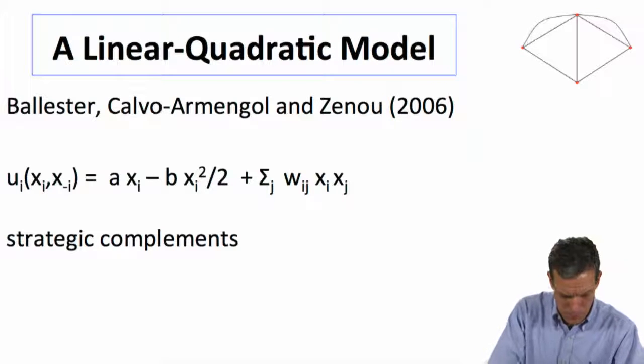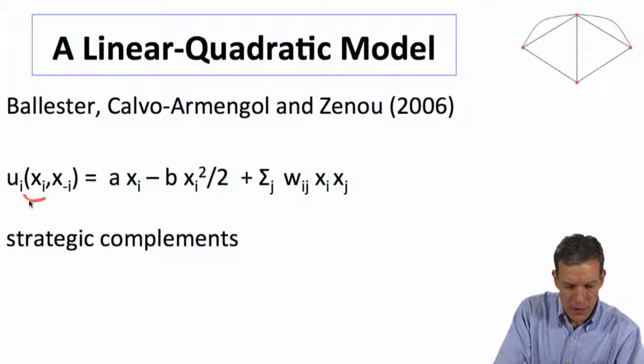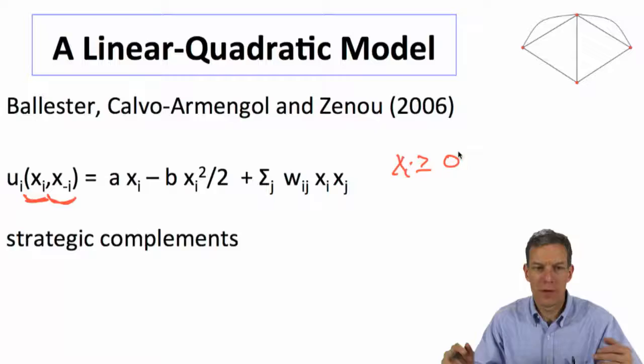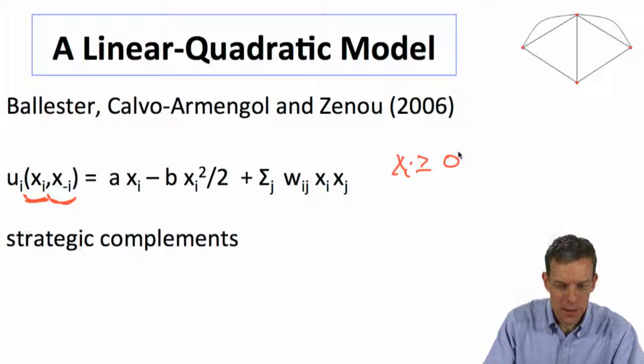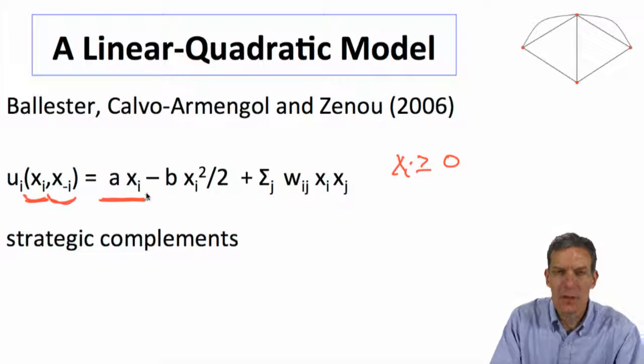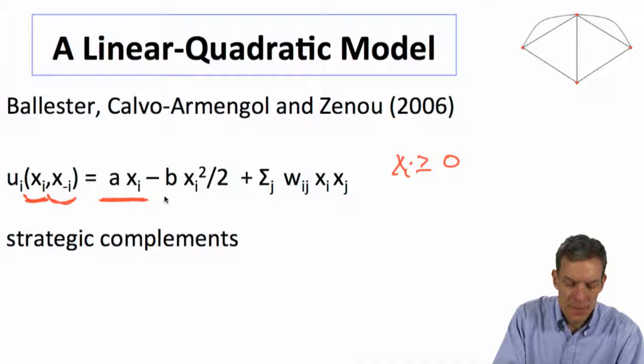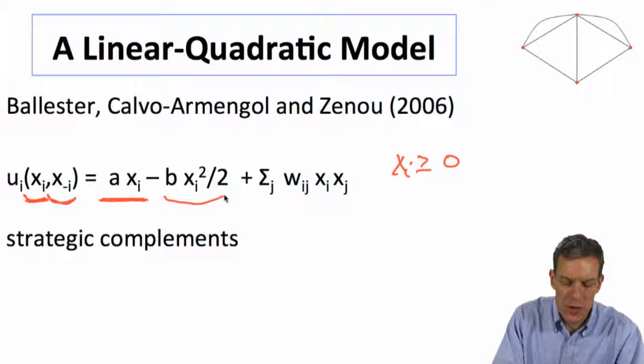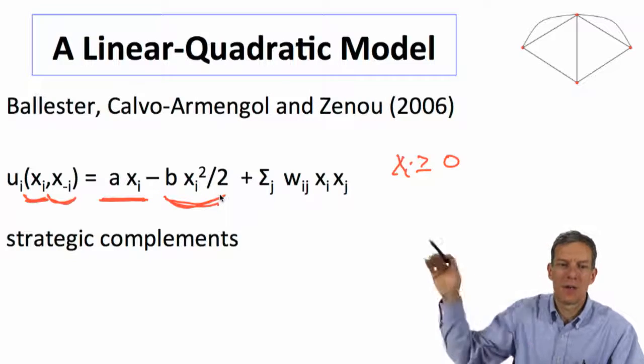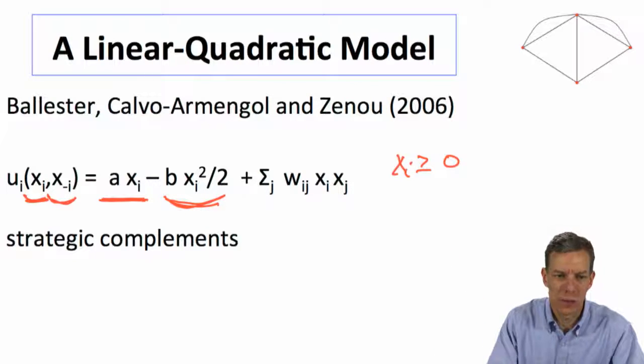And so in particular, when we think of a given individual taking their action xi, other people are taking actions x minus i. Let's let xi be greater than or equal to zero so I'm taking some real valued action. And the utility that people get, and we can see why it's called linear quadratic, so it's going to be increasing in my own action, just linearly. And quadratically, there's going to be a cost, so eventually I don't want to take too much action because I'm going to pay for that in terms of xi squared.